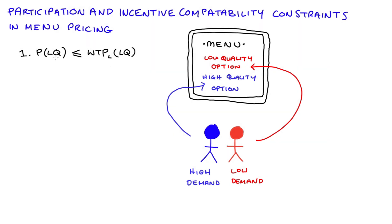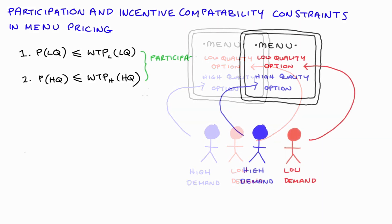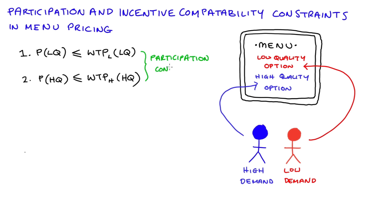Likewise, we want that high quality option to be bought by the high demand consumer, so we want to make sure that the price of that high quality option, P_HQ, is less than or equal to the willingness to pay of the high demand consumer for the high quality option. These two constraints basically just make sure that the options will be cheap enough so that our consumers can buy the options designed for them. These are what we call participation constraints, sometimes called reservation constraints.